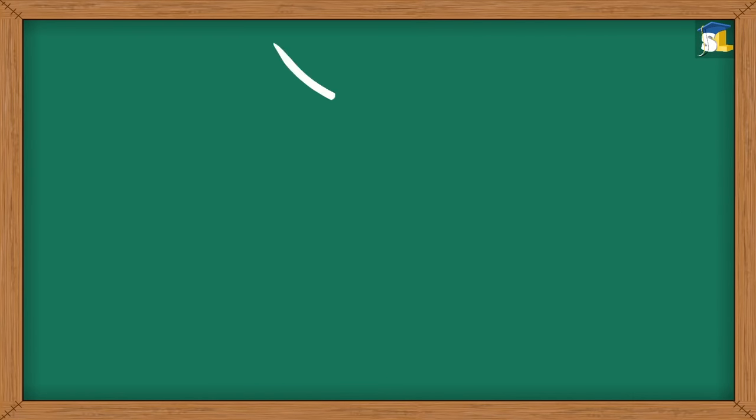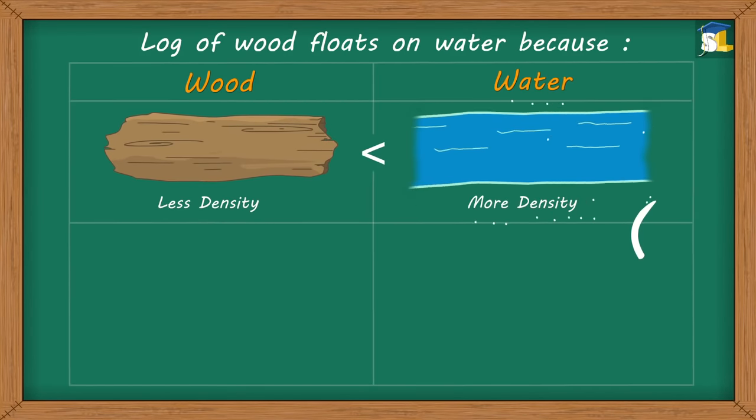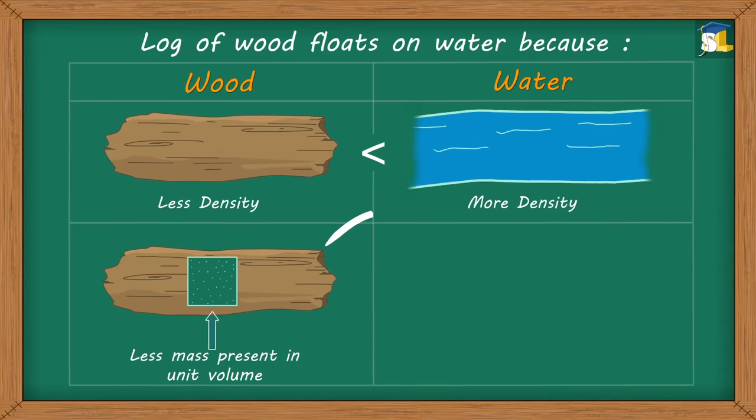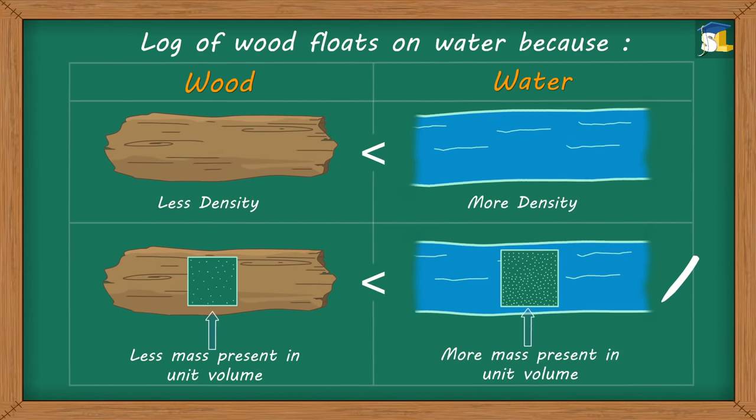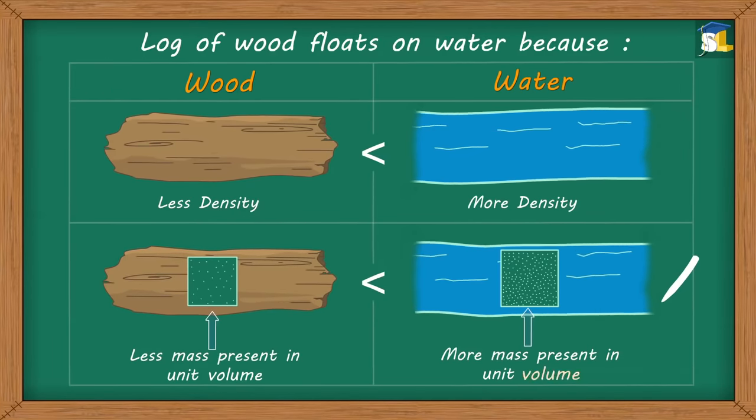In the first case, the log of wood floats on water because it has less density than water. This means that the amount of mass present in unit volume of wood is less than the amount of mass present in unit volume of water.